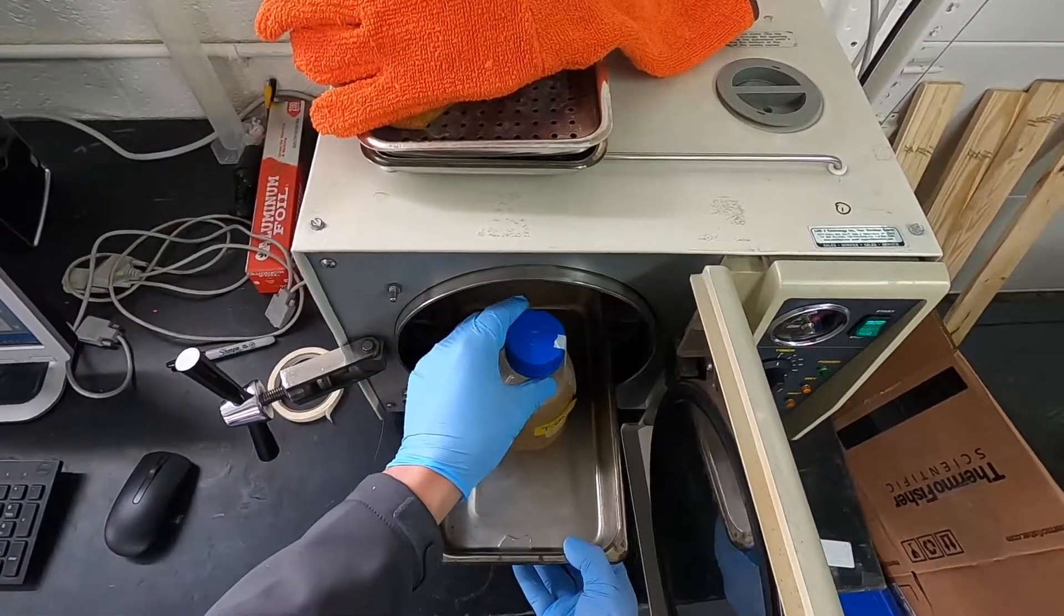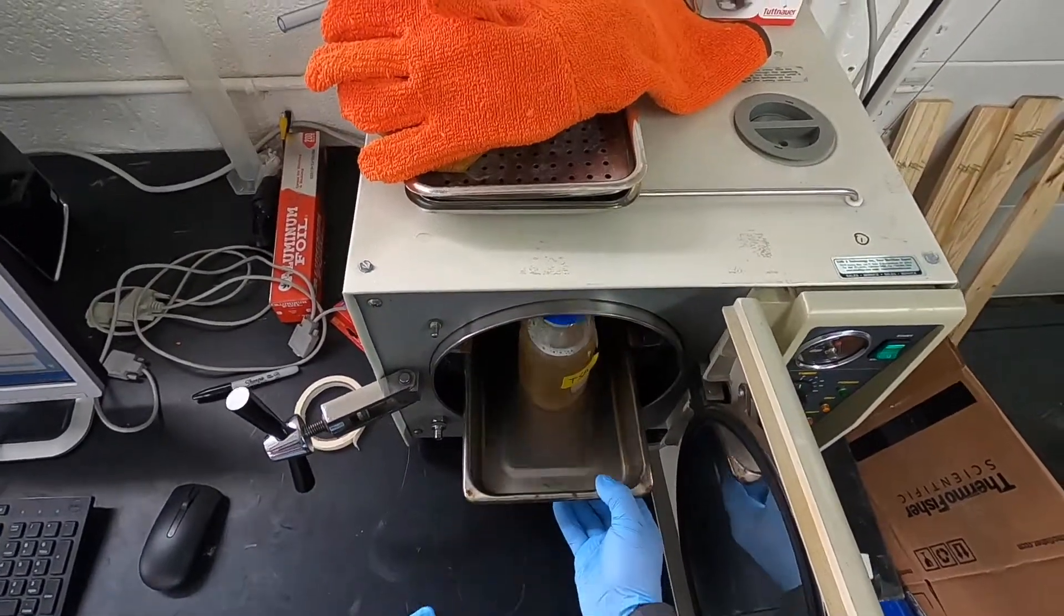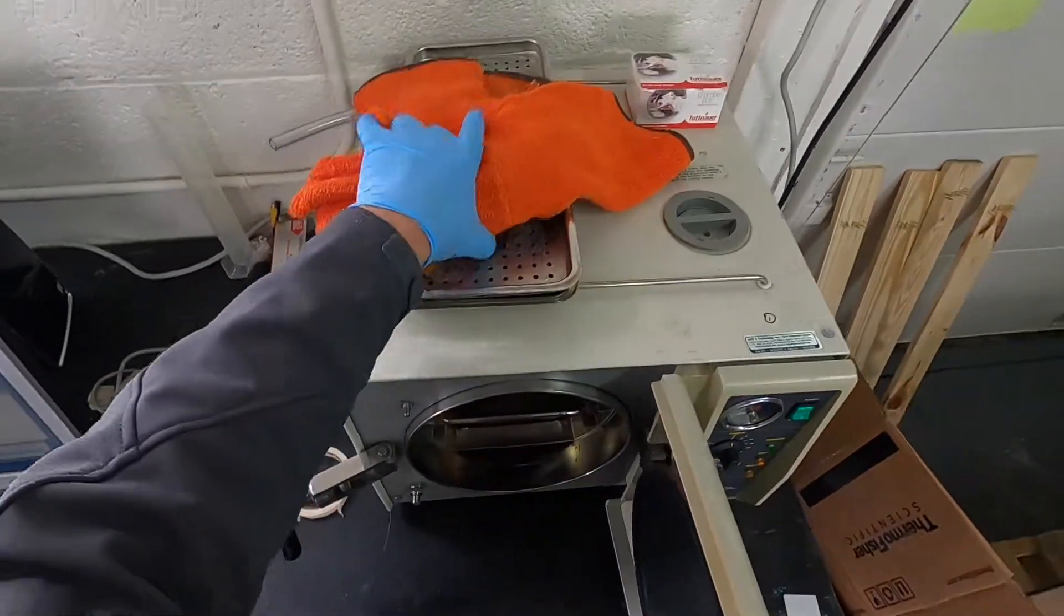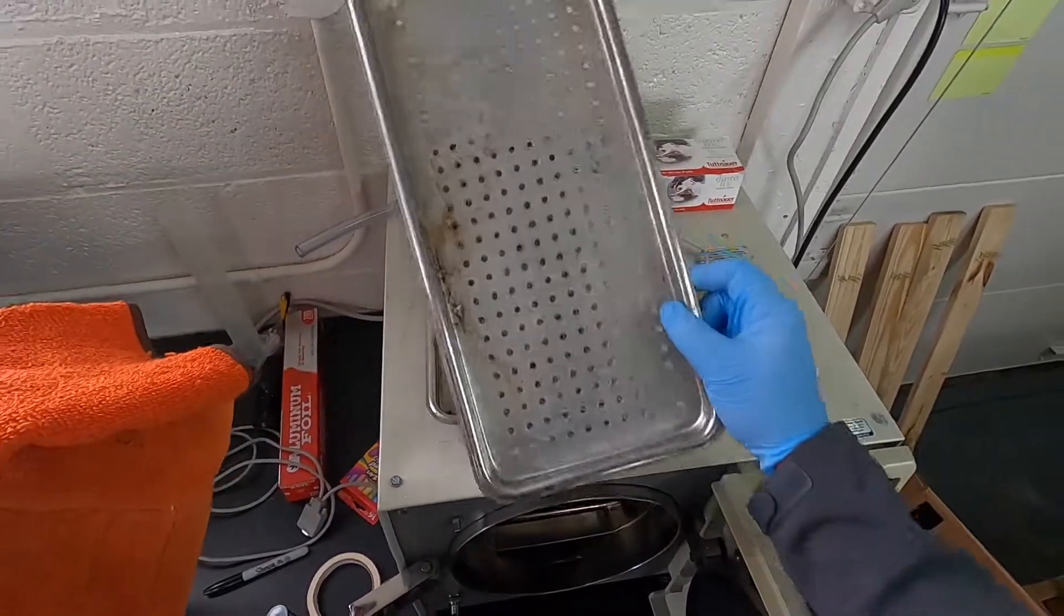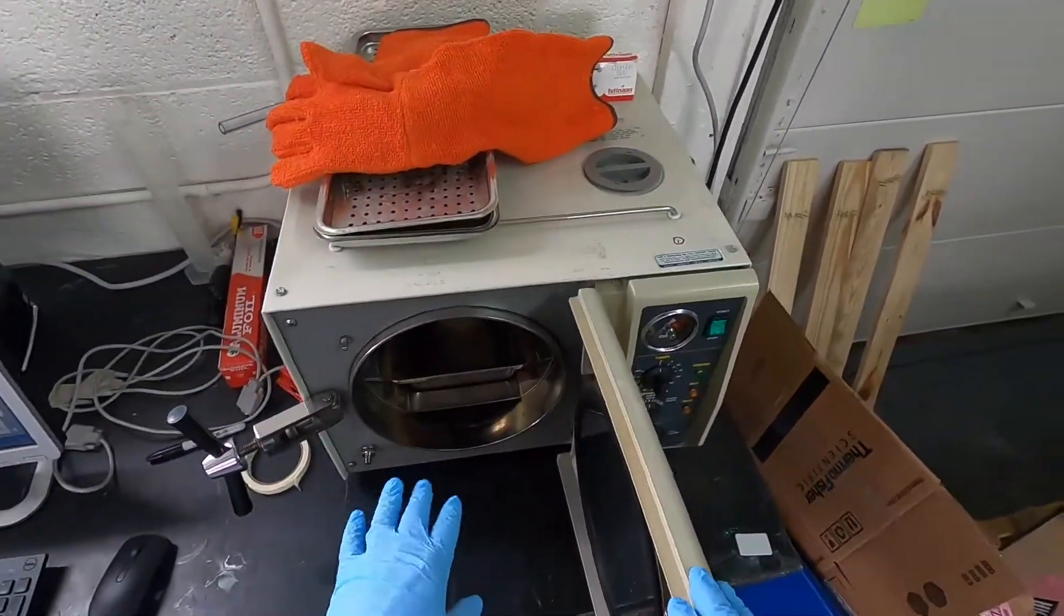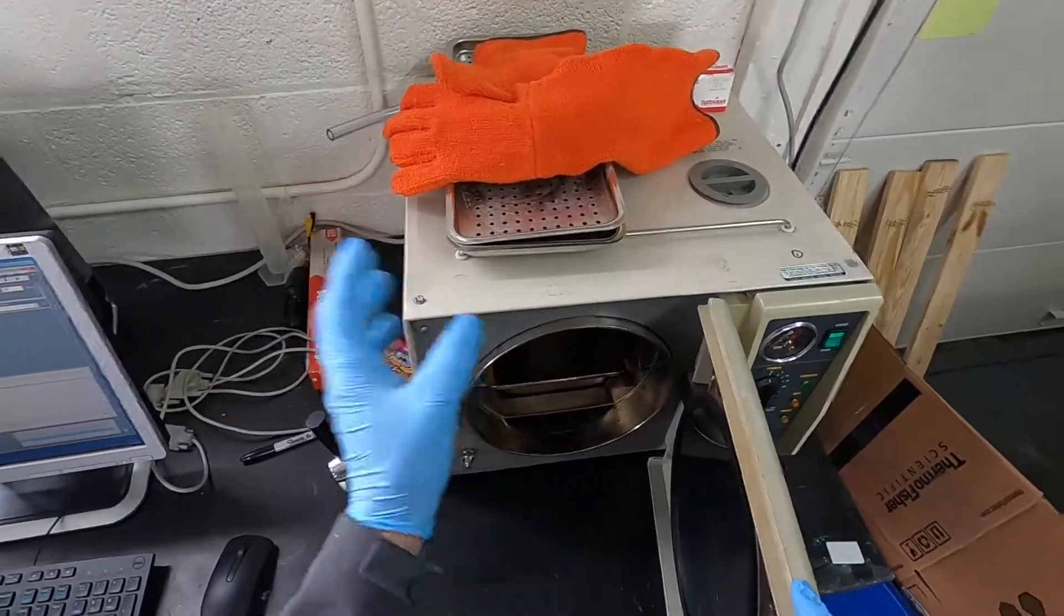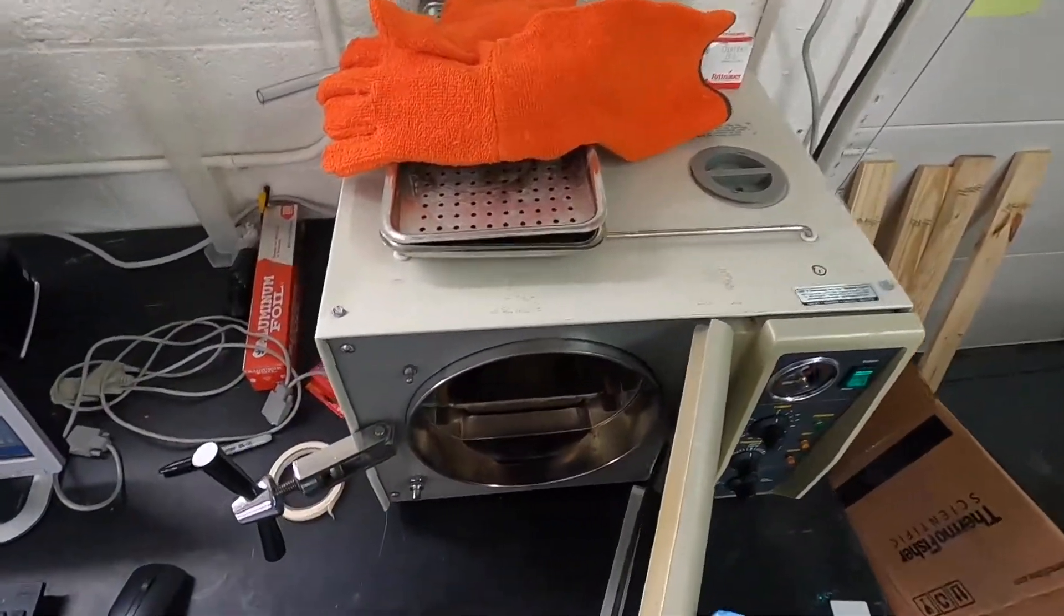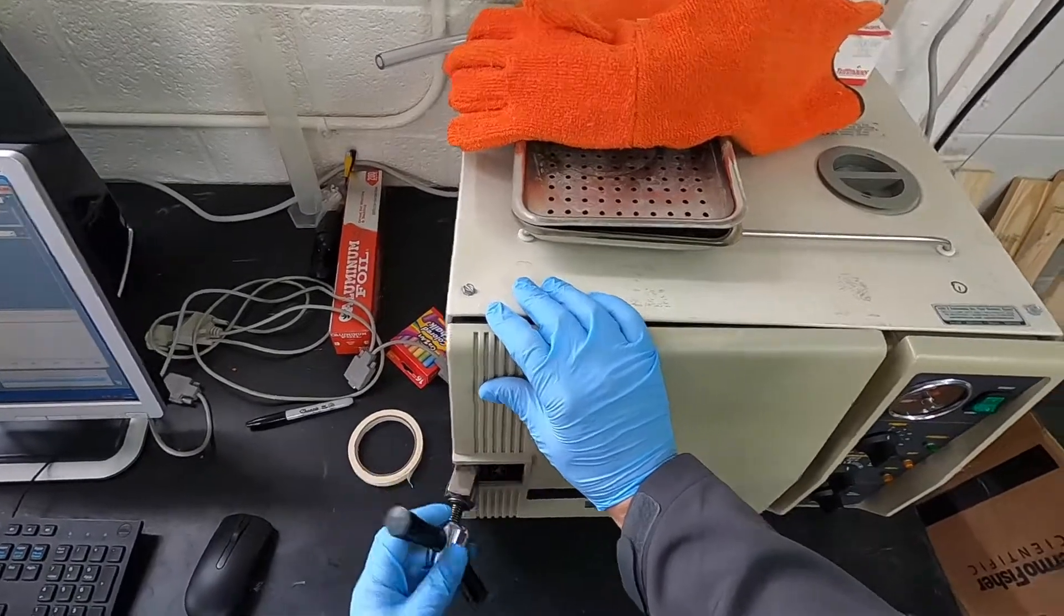Put this in a container that doesn't have holes in it, because whenever you make agar there is boil over. And if you use something with holes, then you get molten agar inside your system, it gets in the tubing, it can plug it up, it can just really gum up and mess up an autoclave.